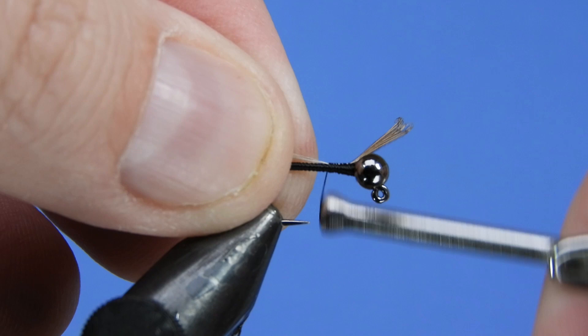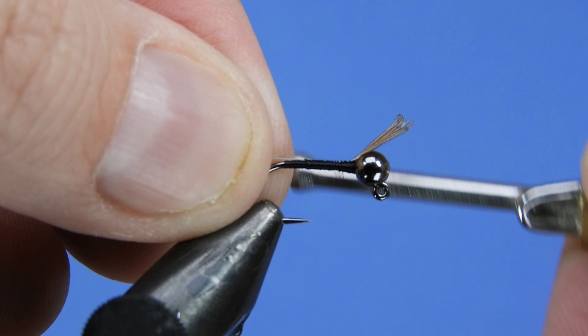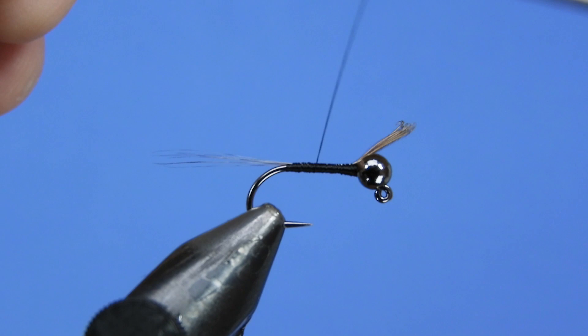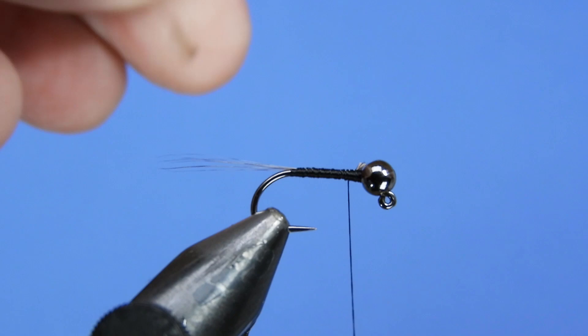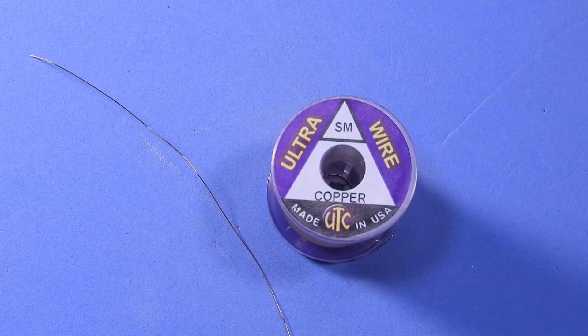We just want to pull those fibers up just a little bit as we wrap down. Just want to keep them seated right on top of the hook shank so that they're not going to be twisting around. You don't want to go too far down the hook. You don't want to go into the bend because those fibers are going to twist around.